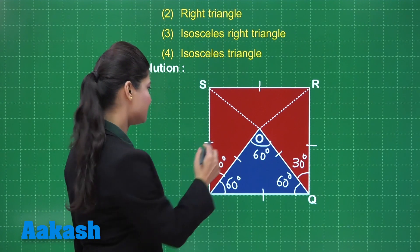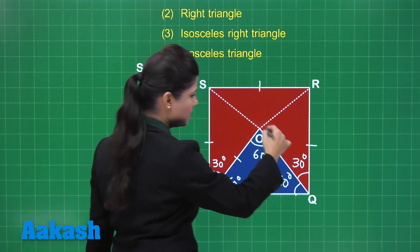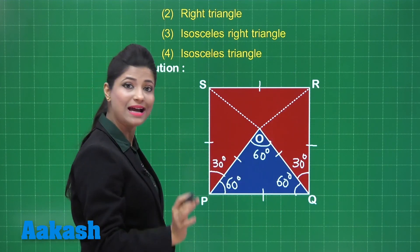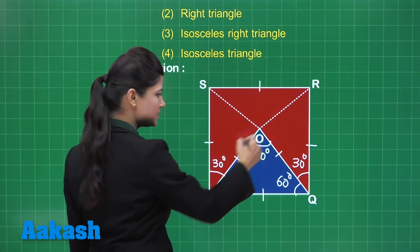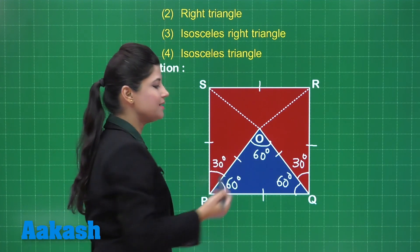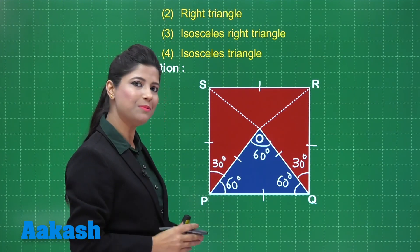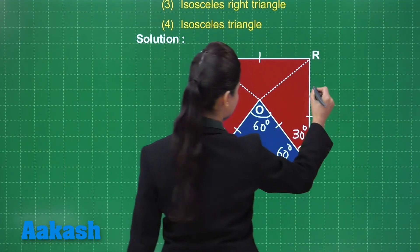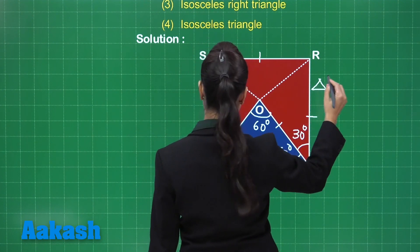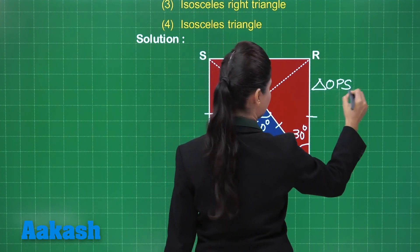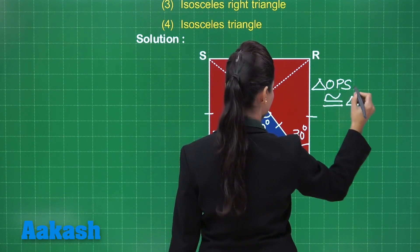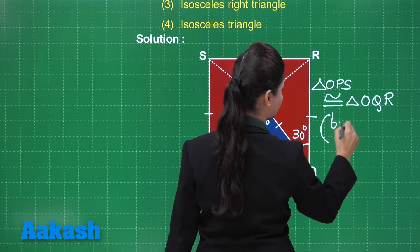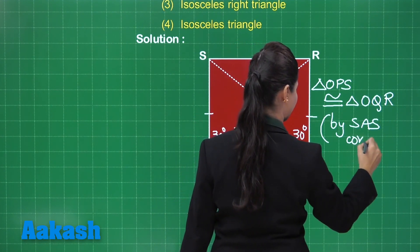Now focusing on triangles OPS and OQR: PS equals QR because they are sides of the square; OP equals OQ as sides of the equilateral triangle; and the included angles OPS and OQR are both 30 degrees. Therefore, triangle OPS is congruent to triangle OQR by the Side-Angle-Side congruence criterion.